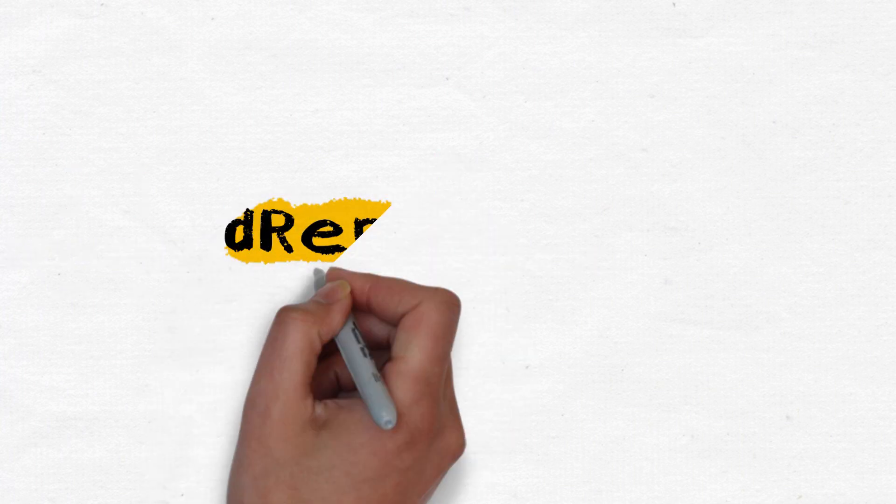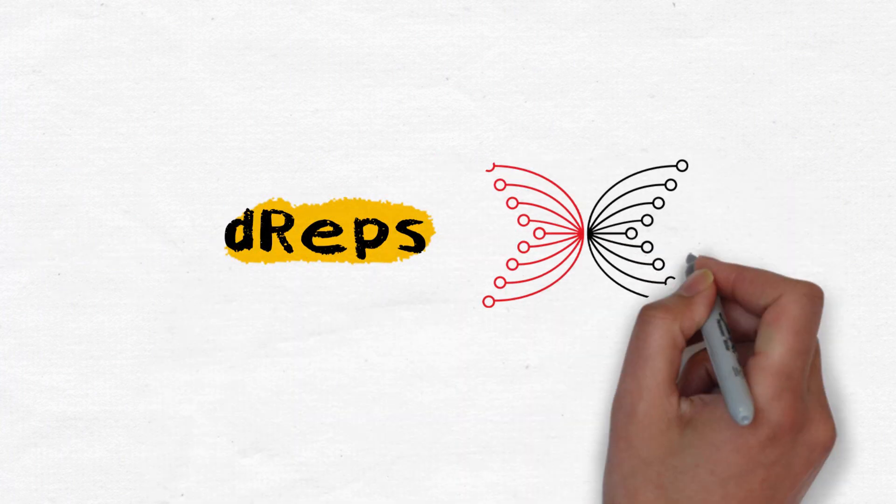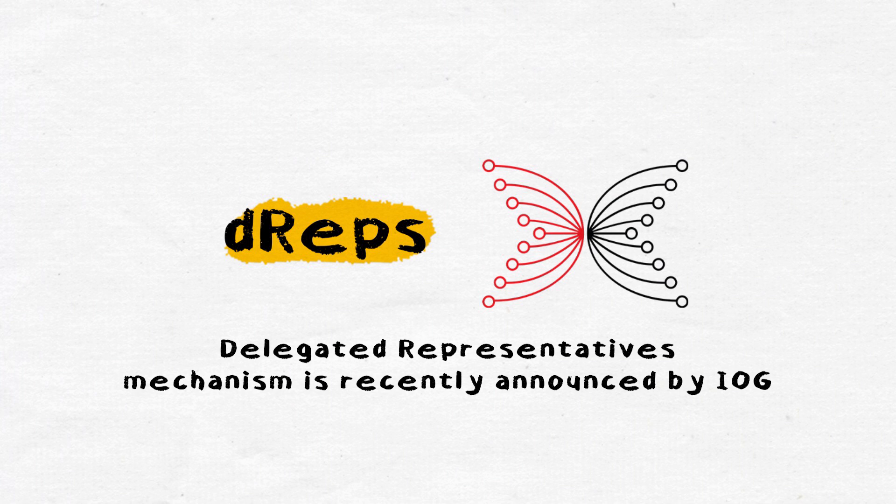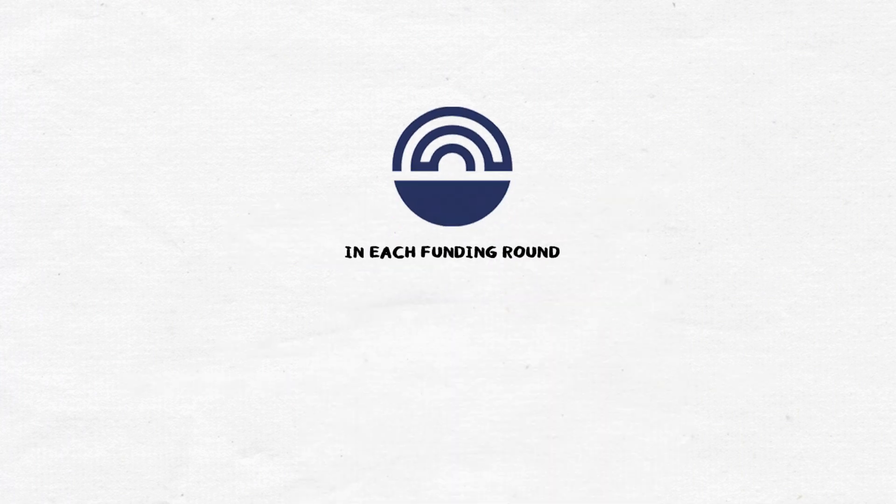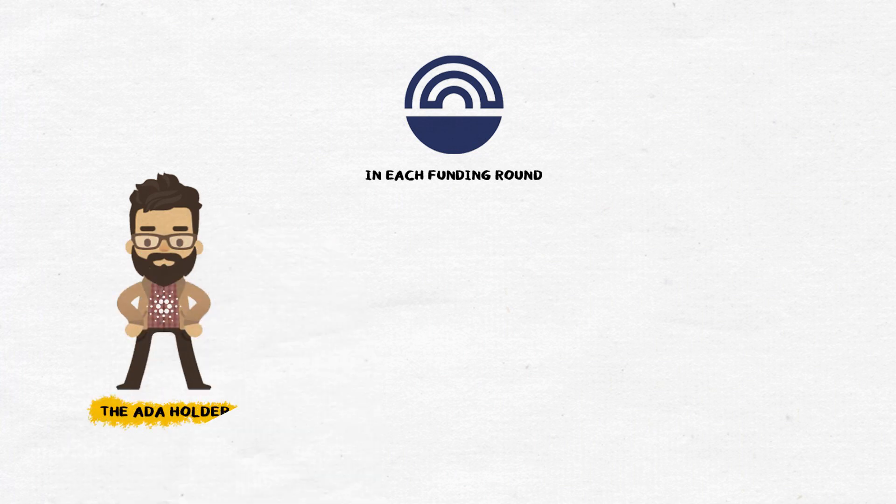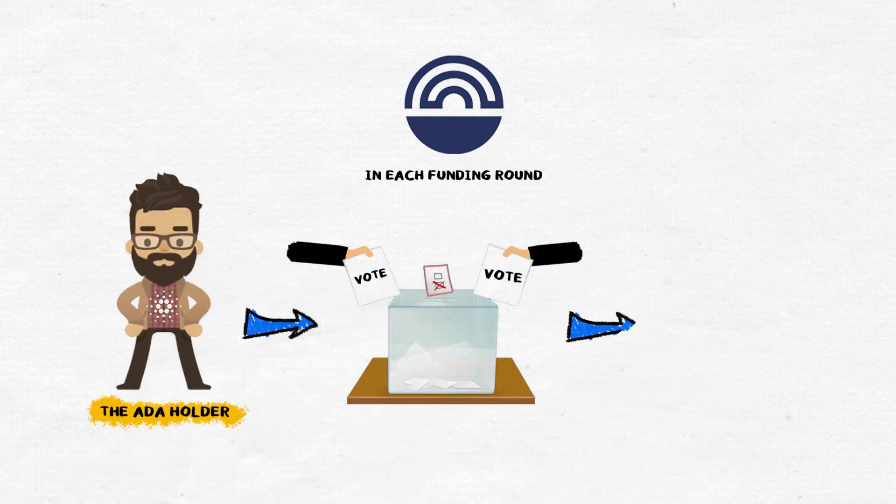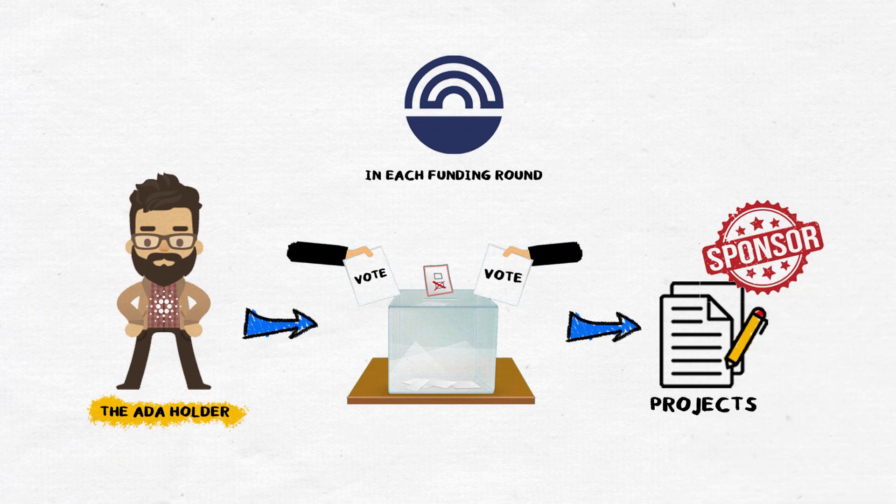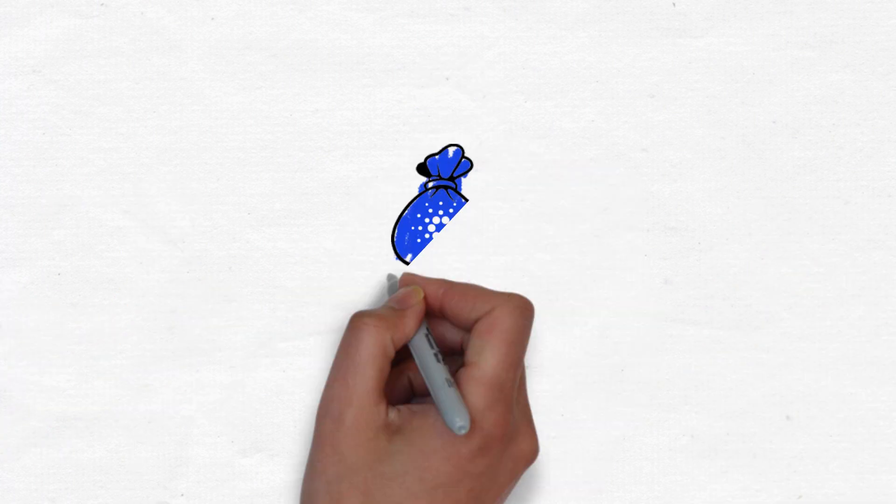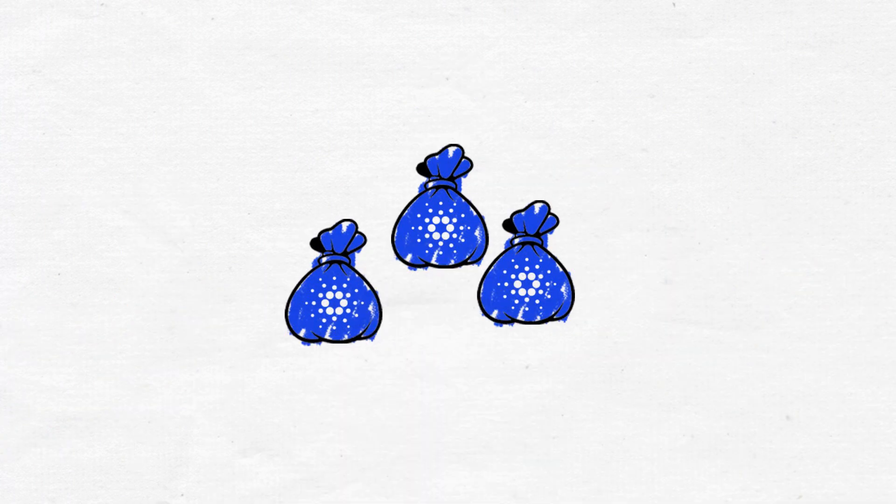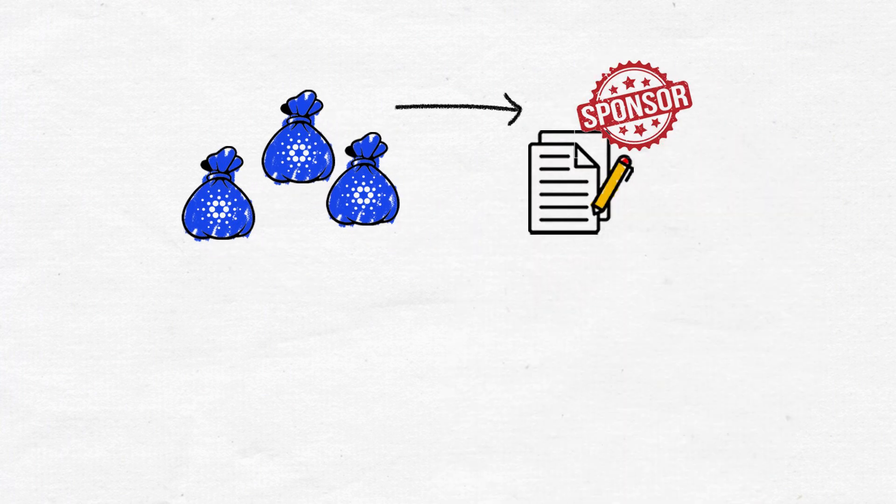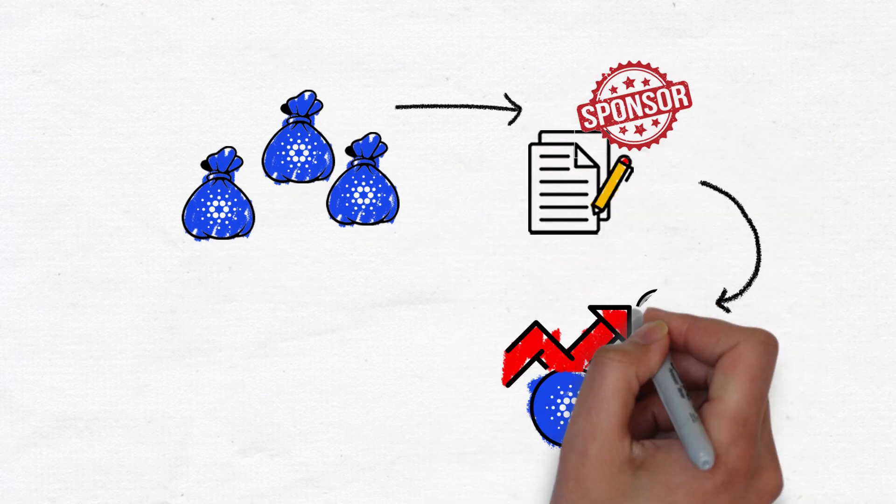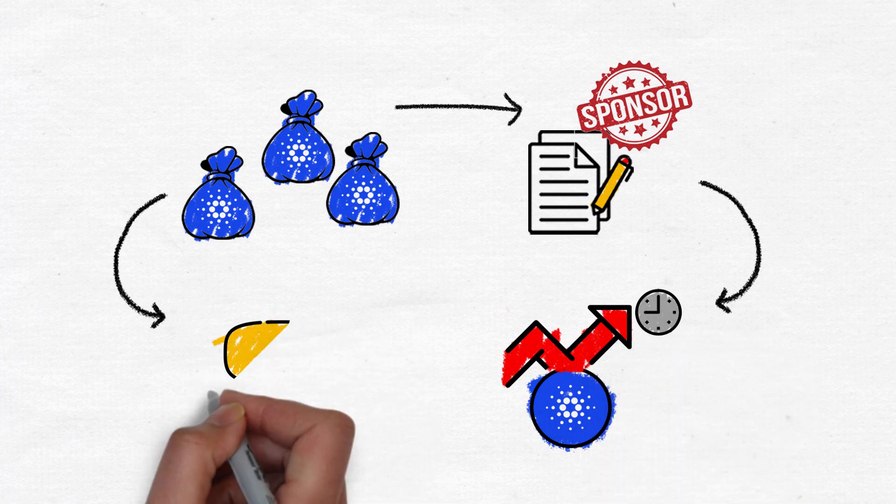In this video, we'll help you get deeper understanding of delegated representatives, which is the mechanism recently announced by IOG. DREPs will help you to vote effectively. In each funding round of the Catalyst project, the ADA holders can cast their vote to the projects which they want to be funded by the community. The total amount of ADA will be the factor to decide the fund of the proposals, thereby it will create the impact on the Cardano ecosystem over time.